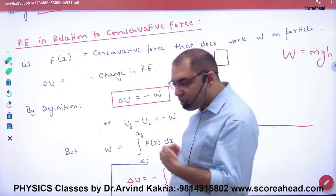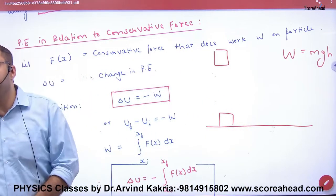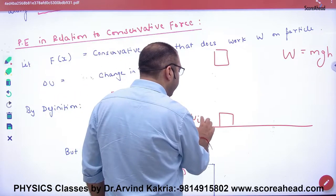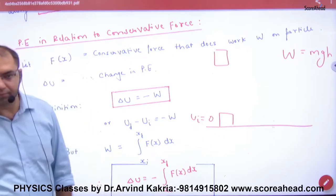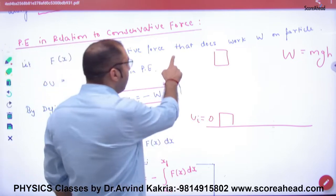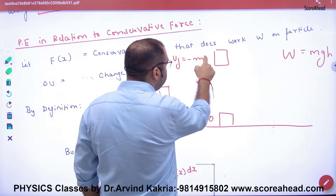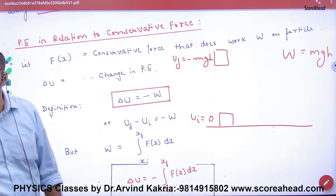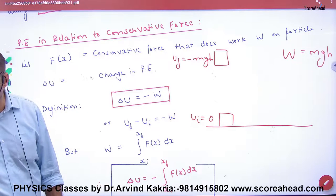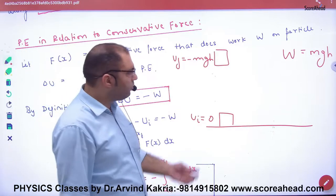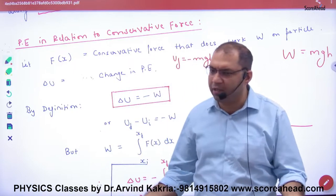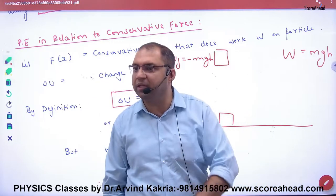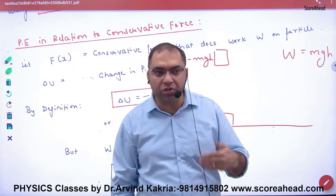From the gravity point of view: when the object is at the ground, the initial potential energy is zero. When the object is lifted to height h, the gravitational potential energy is mgh. Many people ask about potential energy but we have actually calculated work done. The potential energy is not the work done — there is a negative sign.